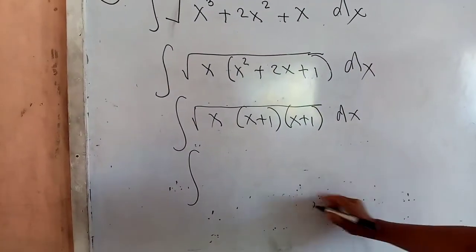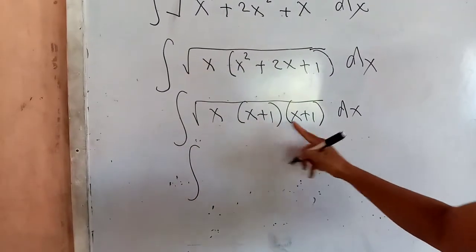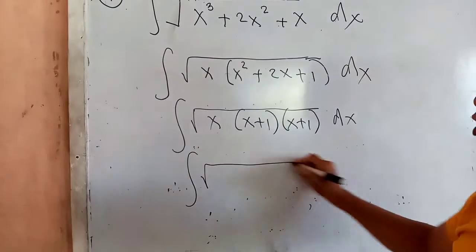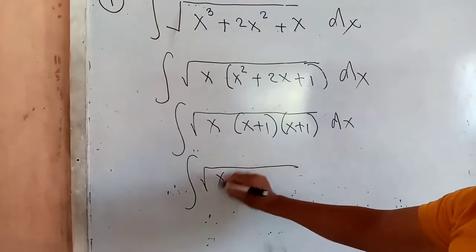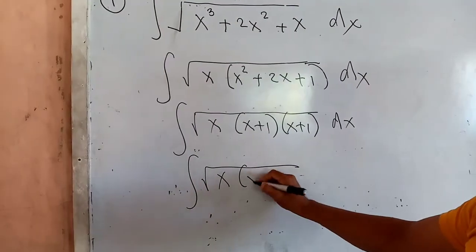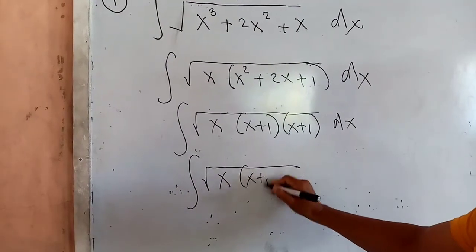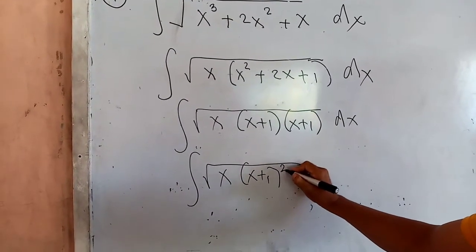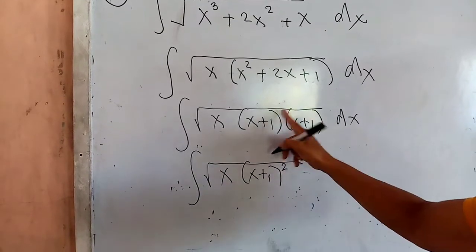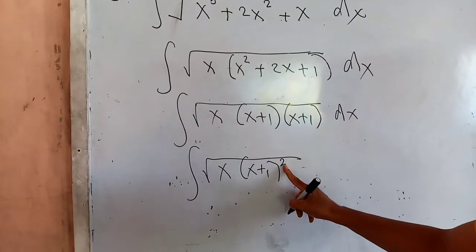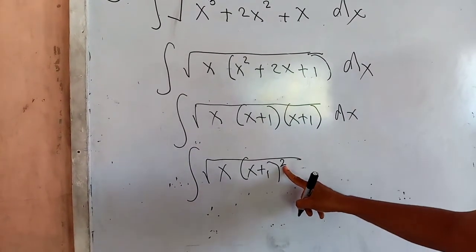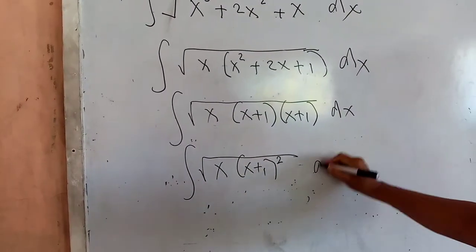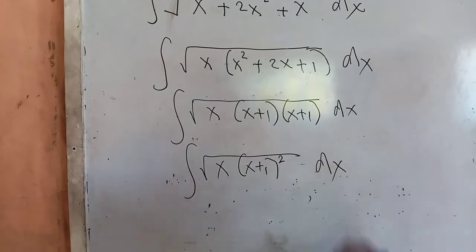In your index of multiplication, you can combine these two, so that would be still the square root of x, times (x plus 1) to the first power, parenthesis squared — because 1 plus 1 would be 2 — times the differential dx.